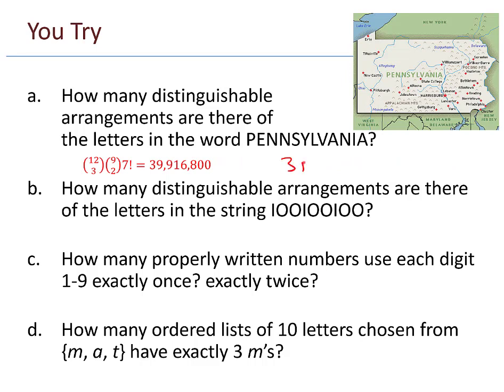How many distinguishable arrangements are there of the letters in the word Pennsylvania? So there are 3 n's and 2 a's, and then everything else is actually unique. So the 12 choose 3 is where I place my n's. The 9 choose 2 is where I place the a's. And then it goes 7 times 6 times 5 times 4 all the way down to 1 for Pennsylvania. Previously in the Mississippi problem I started with m, but you don't have to. You can start with any letter you want.